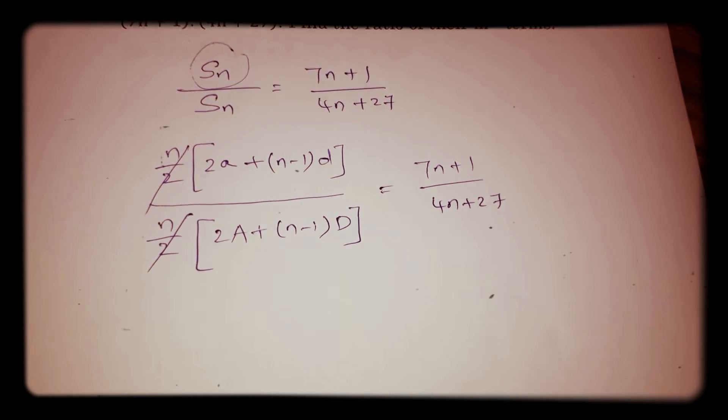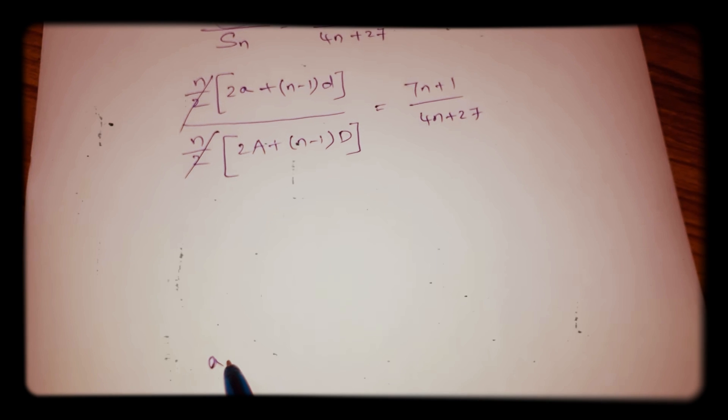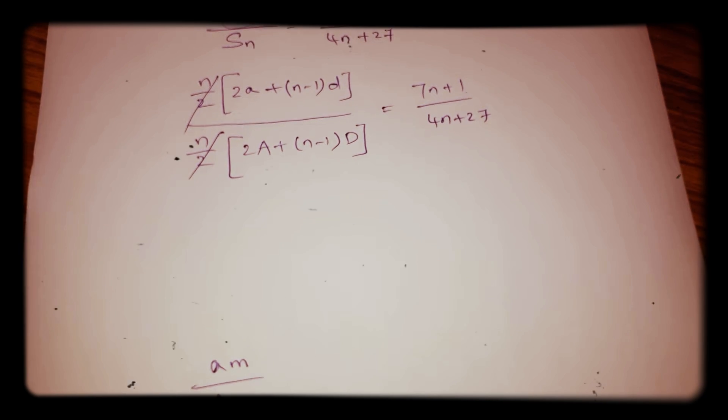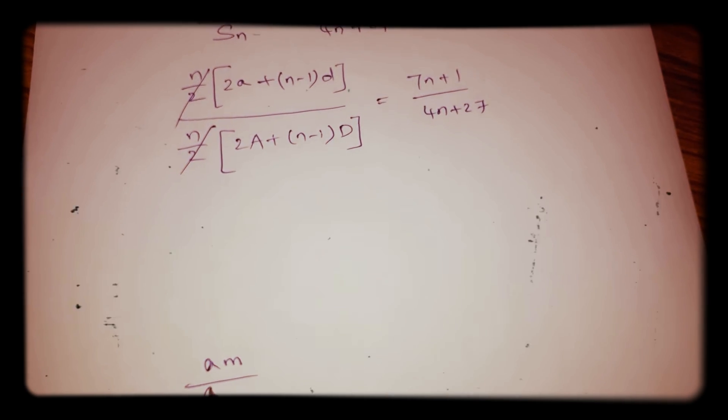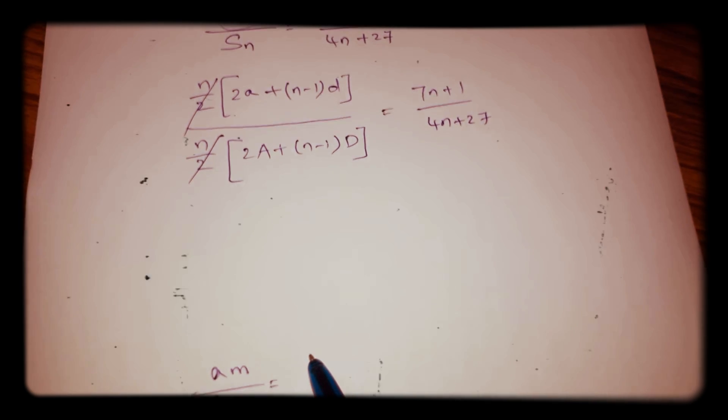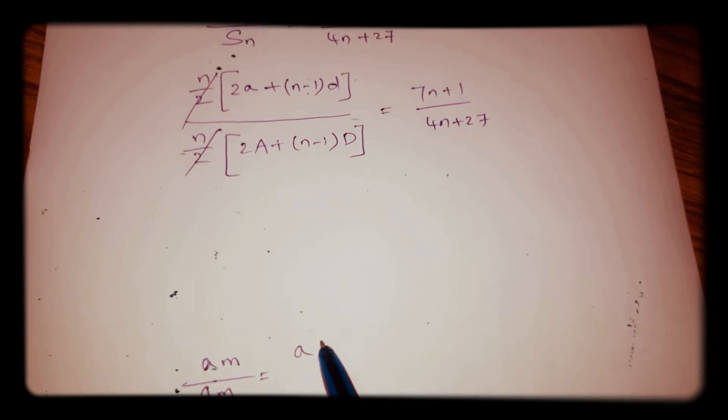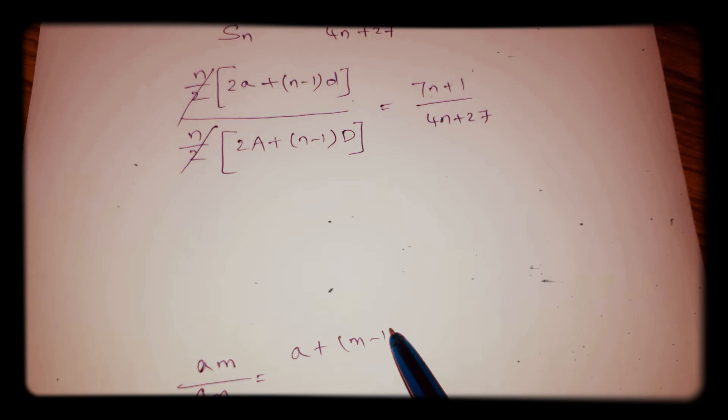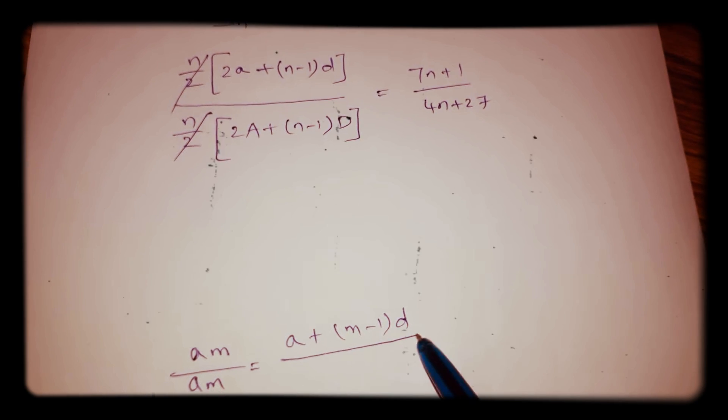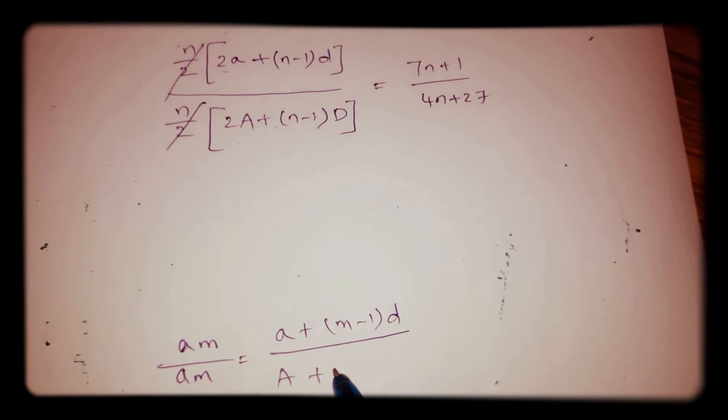Now we need to find the ratio of their mth terms, so am by a'm. The first series is a + (m-1)d. For the second one, capital A plus (m-1) into capital D.